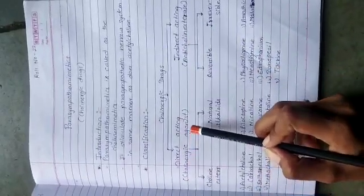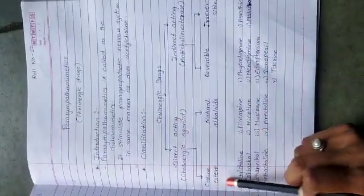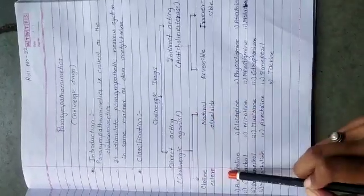Direct acting, that is cholinergic agonist: Cholinesters and natural alkaloids. Cholinesters include acetylcholine, carbacol, bethanechol, and methacholine.